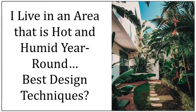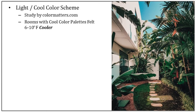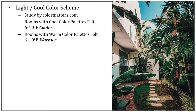If you live in an area that is hot and humid year-round, certain materials and color schemes are preferable. First and foremost, I highly recommend using a light color scheme — colors like white, beige, gray, light gray, and other cool colors such as blue, green, and lavender. In a study by Color Matters, test subjects who entered a room with a cool color palette stated the temperature was 6 to 10 degrees Fahrenheit cooler than the room's actual temperature, while those who entered a room with a warmer color palette stated it was 6 to 10 degrees warmer. That is worth considering as you make your color palette choices.